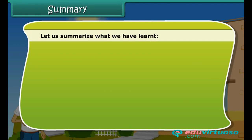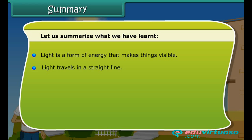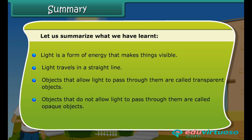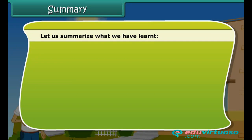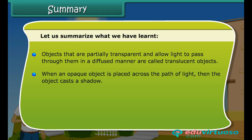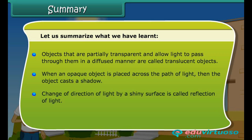Let us summarize what we have learned. Light is a form of energy that makes things visible. Light travels in a straight line. Objects that allow light to pass through them are called transparent objects. Objects that do not allow light to pass through them are called opaque objects. Objects that are partially transparent and allow light to pass through in a diffused manner are called translucent objects. When an opaque object is placed across the path of light, it casts a shadow. The change of direction of light by a shiny surface is called reflection of light.